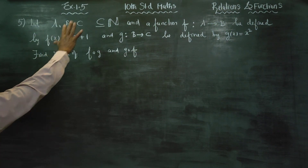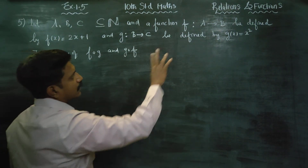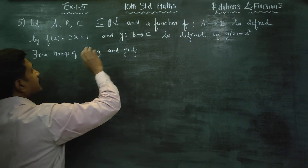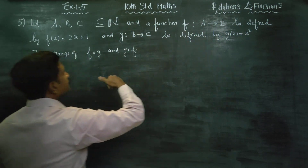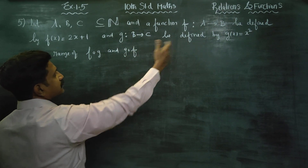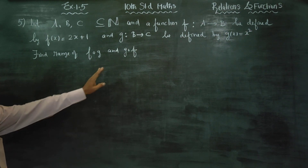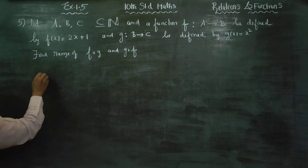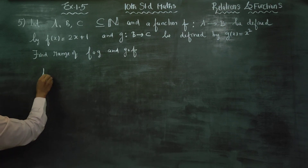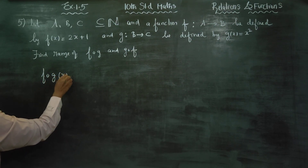All sets are natural numbers. Then A to B is natural numbers, and B to C is natural numbers. We will find F dot G and G dot F. First, I will start with F dot G.